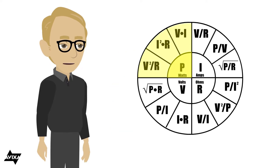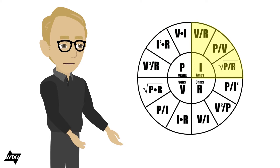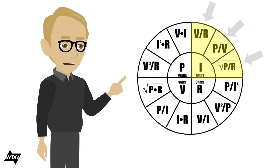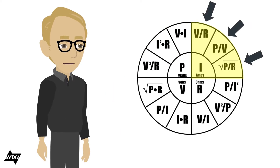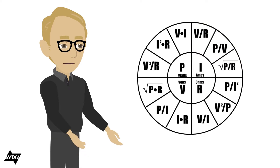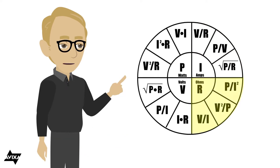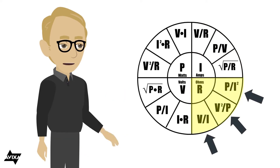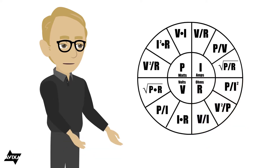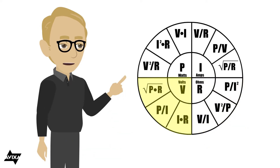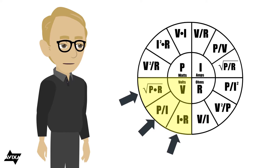If I want to solve for current, I'm going to take the upper right quadrant — here are my formulas for solving for current. If I want to know what the resistance is in the circuit, I'll take the lower right quadrant and look at those formulas. If I want to solve for voltage, I'll look at the lower left quadrant.